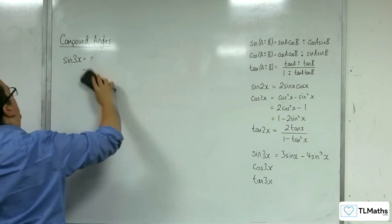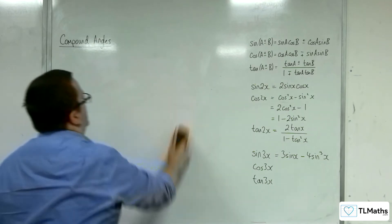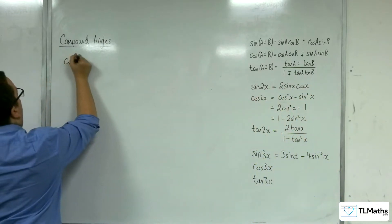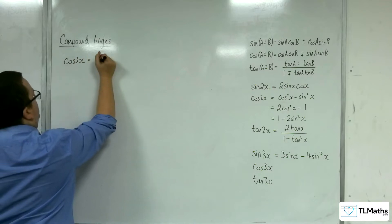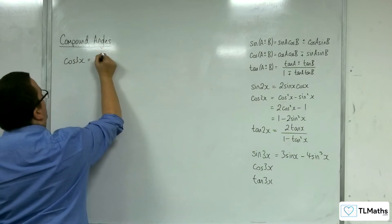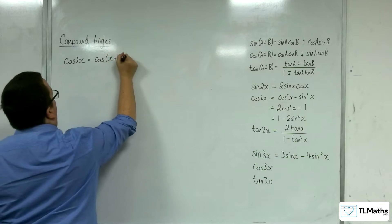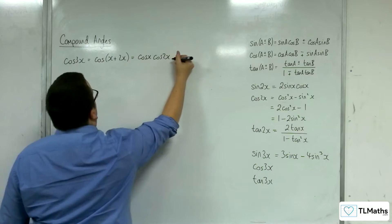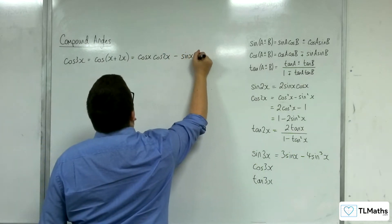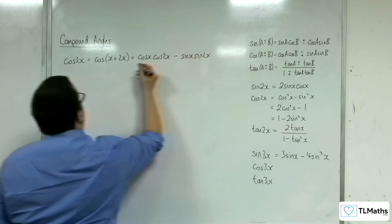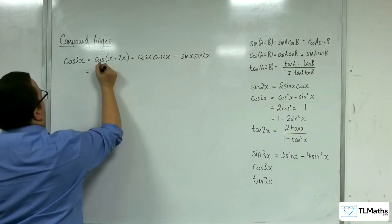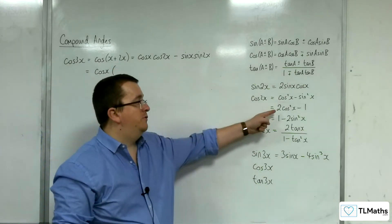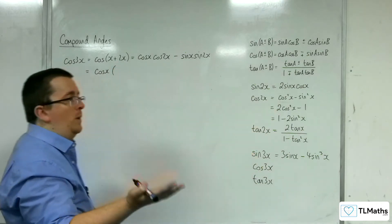So we're going to use a similar tactic for cosine 3x. So cosine 3x using the compound angle formula. So cosine of x plus 2x. So cosine x, cosine 2x, take away sine x, sine 2x. OK, so cosine x. Now we're going to replace cosine 2x with just in terms of cosine. So 2 cosine squared minus 1.